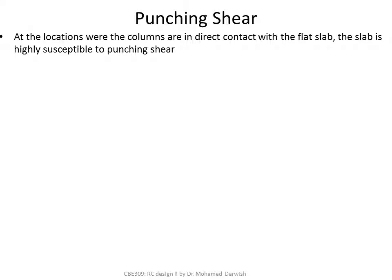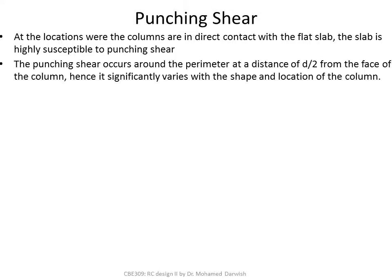At the locations where the columns are in direct contact with the flat slab — especially if you don't have beams at these locations — the slab is highly susceptible to punching shear. Punching shear occurs around the perimeter at a distance of D over 2 from the face of the column.